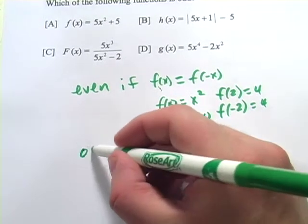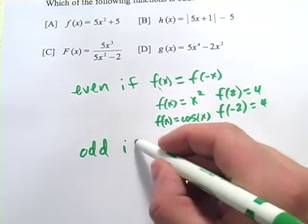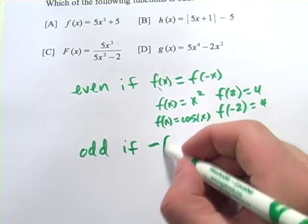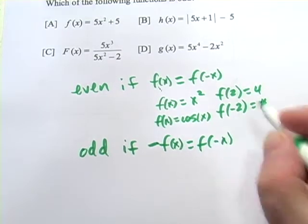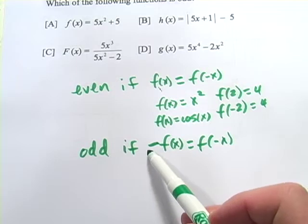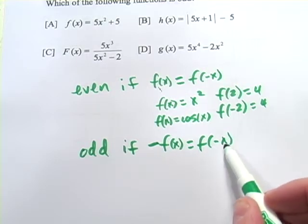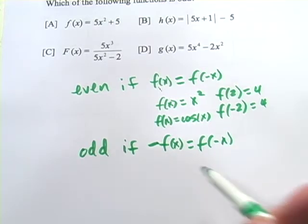An odd function is if negative f of x equals f of negative x. So you take the whole function, you put a negative sign in front of it, and then you evaluate the function at negative x and see if they're the same.